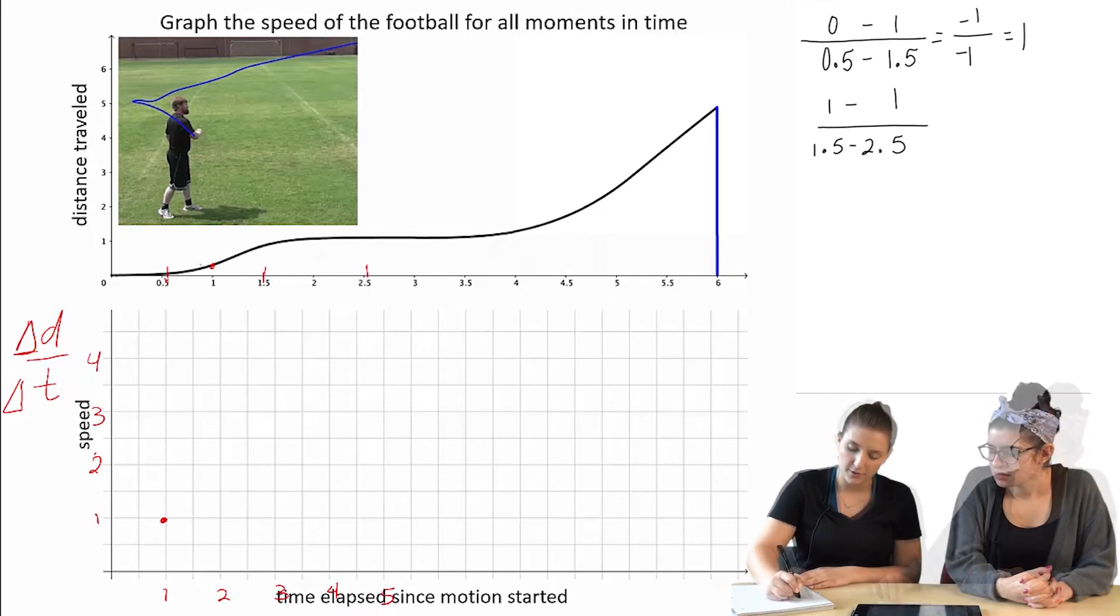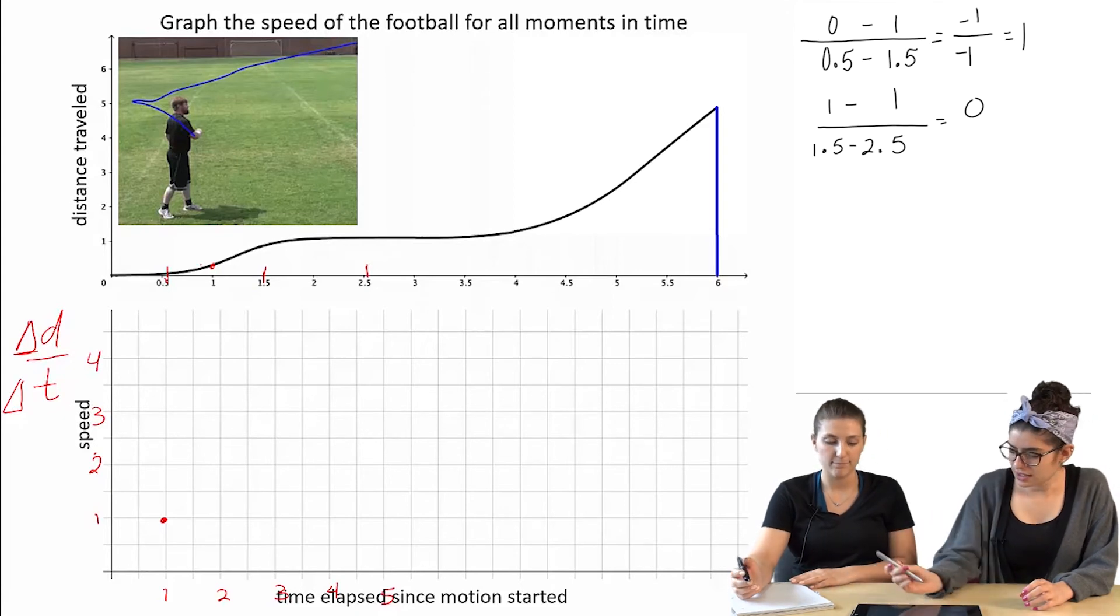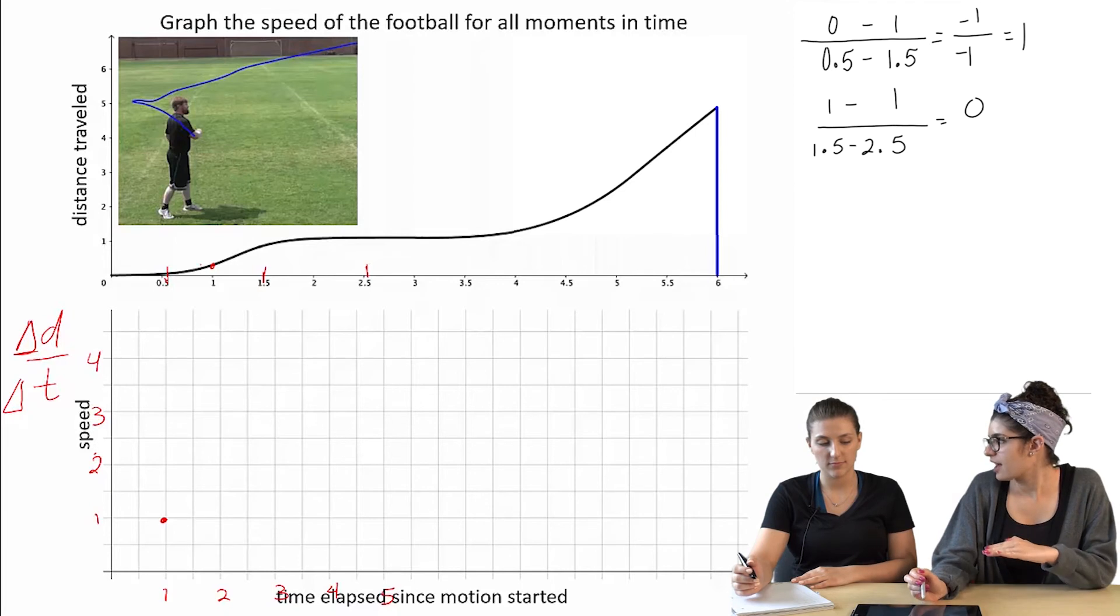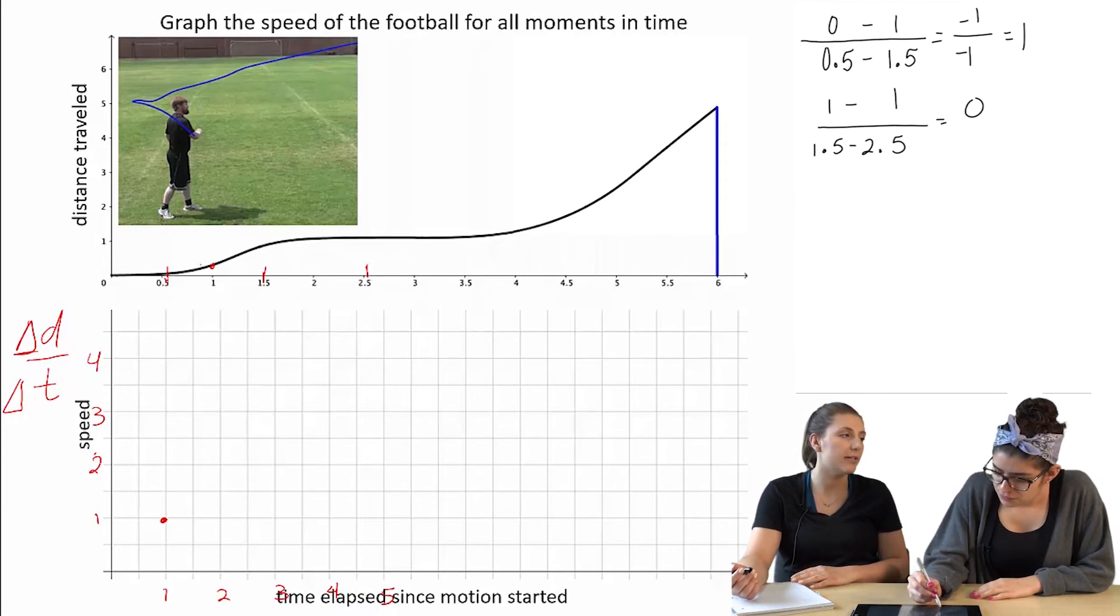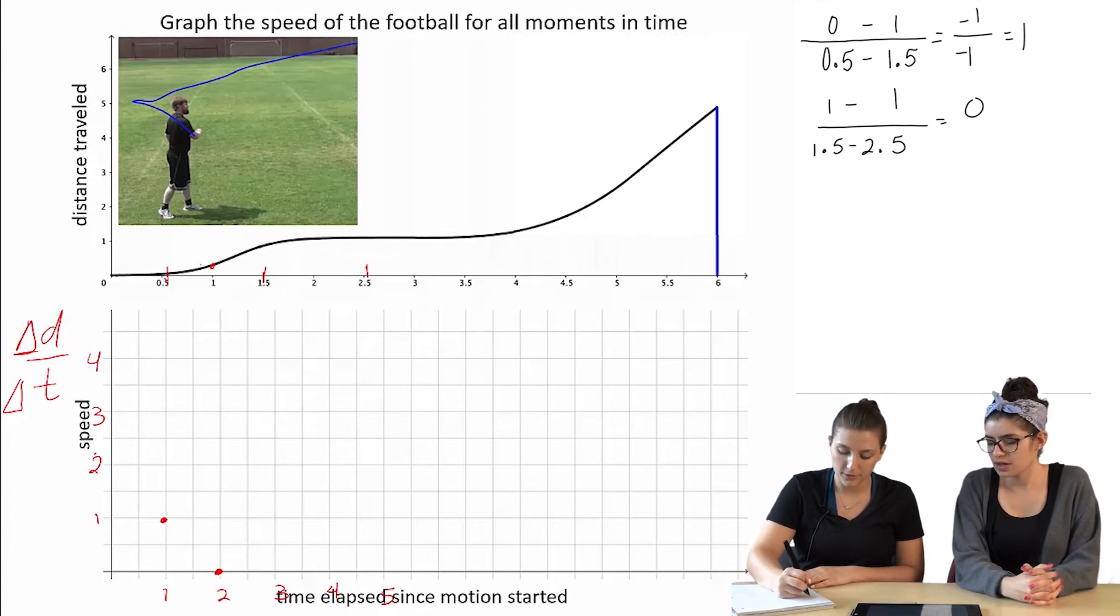So now let's do 2. So that would give us 0. Okay. Which I guess makes sense, because it's kind of a flat... I guess so. It's like a plateau there. Right, because we're finding the slope when we're taking the average rate of change. Okay. So 2 would be 0. And then 3.